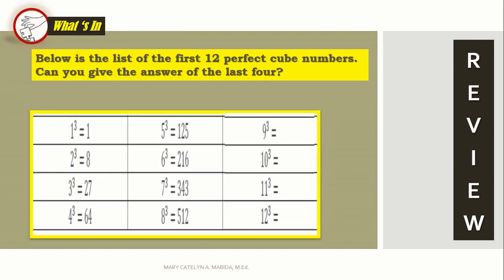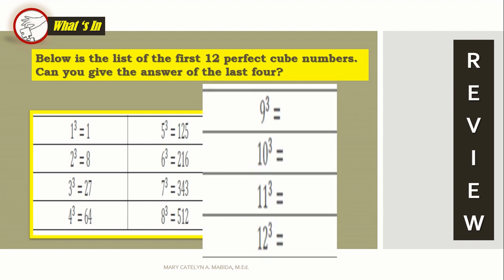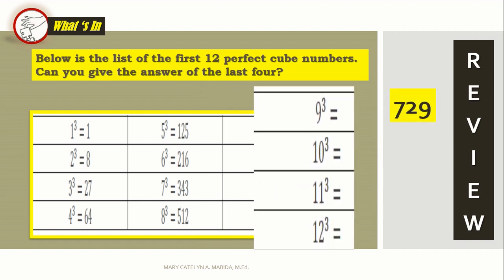Now, can you give the answer to the last four? Okay, let's do it. Nine cube is equal to? That's correct, seven hundred twenty-nine. Ten cube is equal to? You're right, it's one thousand. Eleven cube is equal to? One thousand three hundred thirty-one. Good job. And lastly, twelve cube is equal to? Excellent! That's one thousand seven hundred twenty-eight.